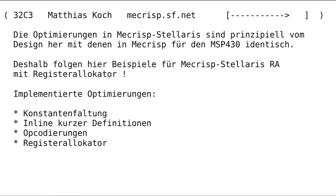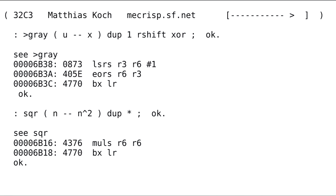The MiCRISP Stellaris is a direct port of MiCRISP, and the Stellaris launchpad was the first target. It is almost identical to the MSP430, at least in respect to optimizations, but it has a register allocator that I want to show you now. Here is a more complicated example — this is the Gray code. If you count up, only one bit changes.